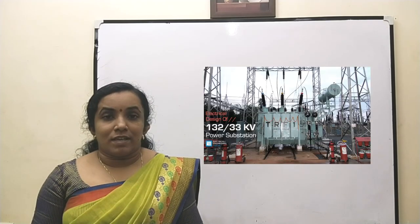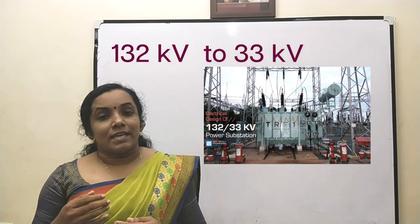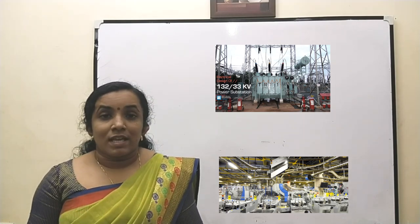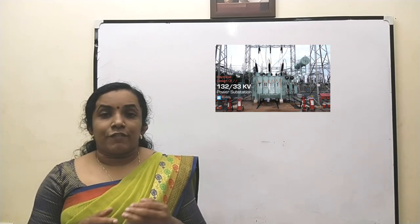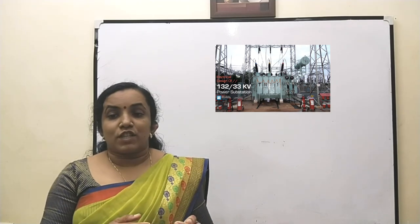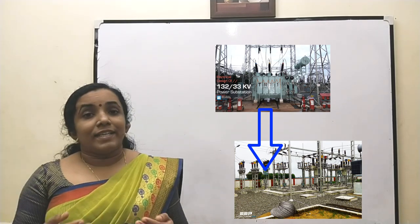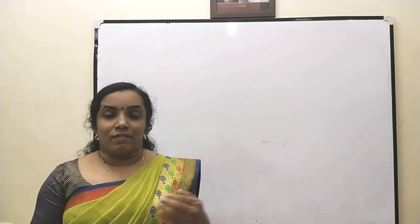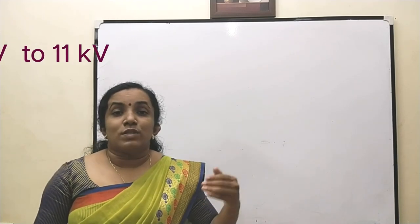At the main substation, power is stepped down from 132 kV to 33 kV and sent to heavy industries. From the main substation, current is also sent to the intermediate substation, where it is stepped down again to 11 kV and supplied to small-scale industries and the city substation.